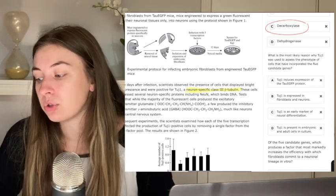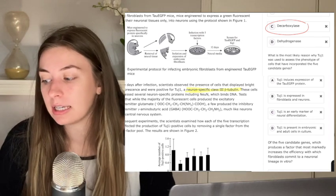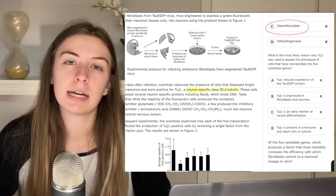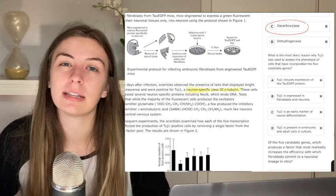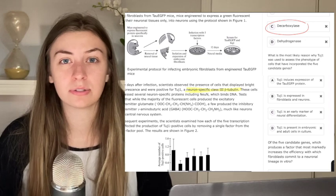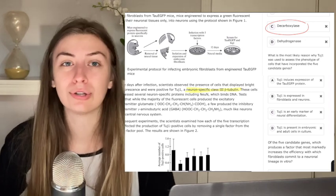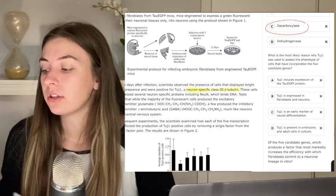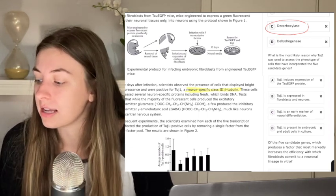D says TUJ1 is present in embryonic and adult cells in culture. I wasn't given any passage information to tell me that it's present in both embryonic and adult cells. And I'm not even sure if they're using adult cells. I like C better. The correct answer here is C.